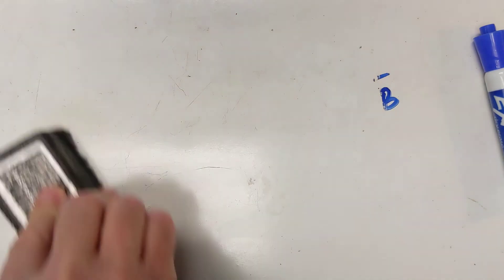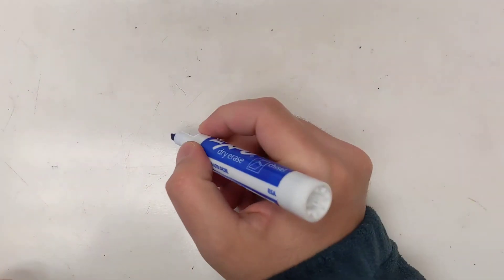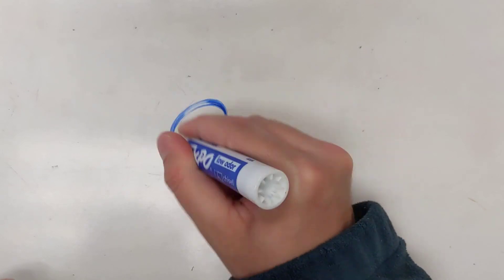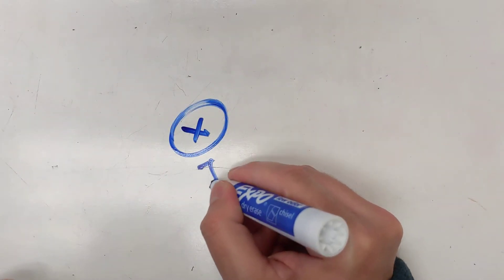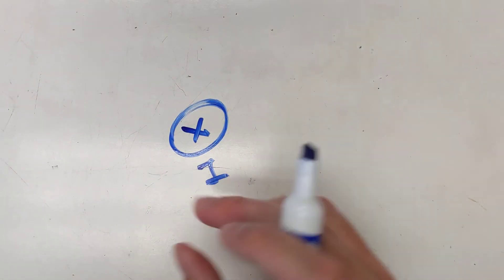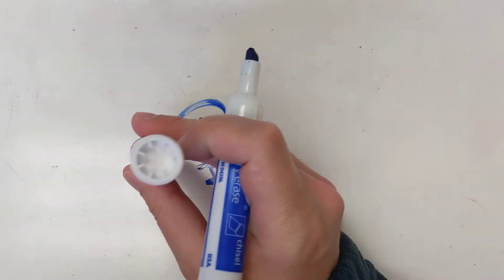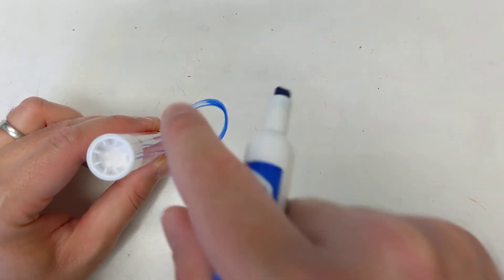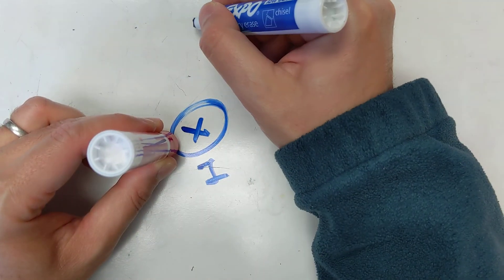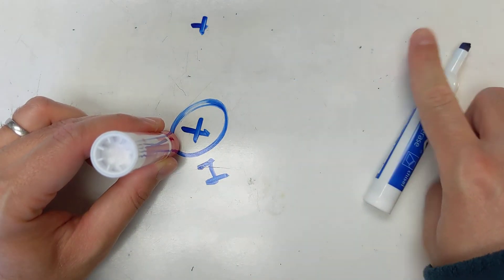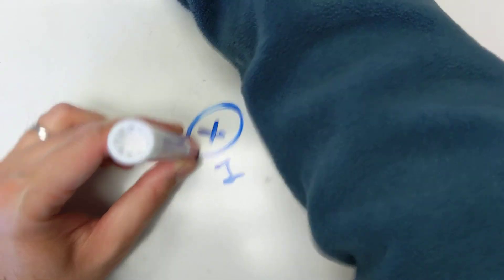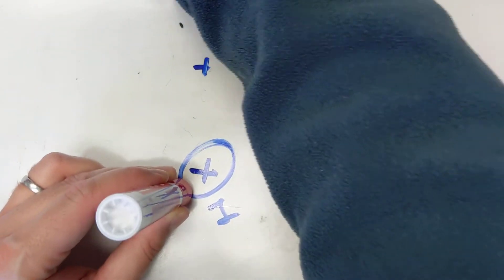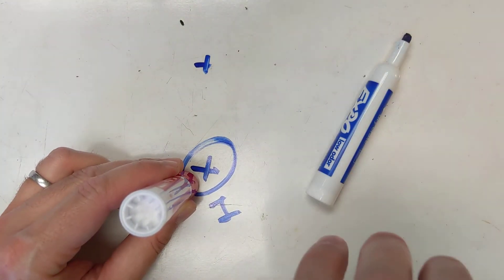Now I can show you the perspective if the current is flowing into the page. So if this is the current and it's going into the page and I want to find the magnetic field here...